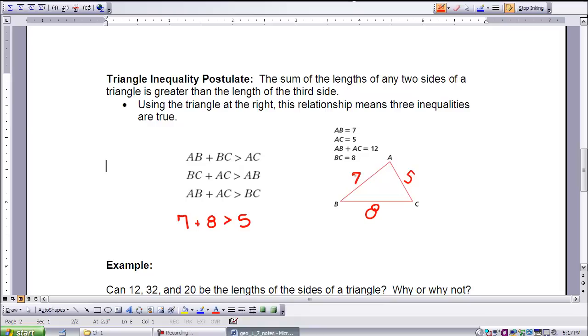Let's test it with BC. If BC is 8 and AC is 5, is that greater than AB, which is 7? Yes, it is. And let's try the last one.